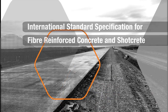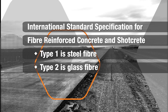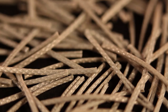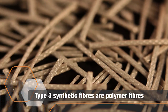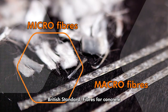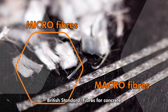International standards classify three general types of fiber for concrete reinforcement: steel fiber, glass fiber, and synthetic fiber. Synthetic fibers are broadly classified as polymer fibers, and international standards divide these into micro and macro fibers.